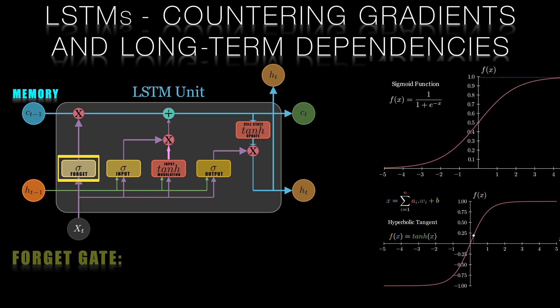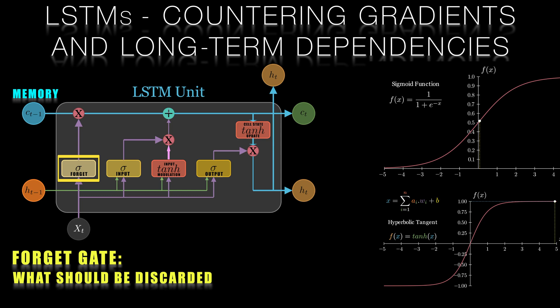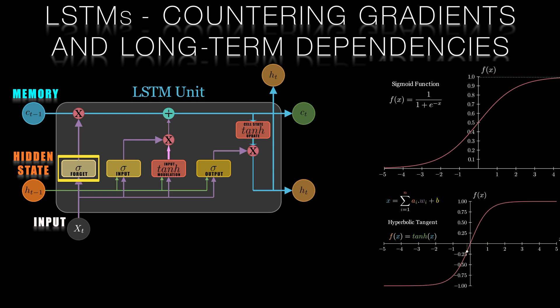So the forget gate determines which information should be discarded from the memory cell. It takes as input the previous hidden state and the current input. It passes them through a sigmoid and therefore outputs a value between 0 and 1 for each element of the memory cell. A value of 0 means that the information should be completely forgotten while a value of 1 means that the information should be fully retained.